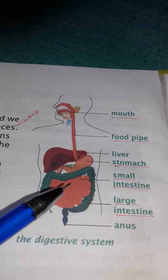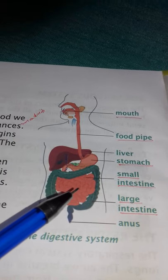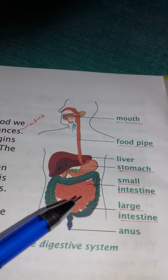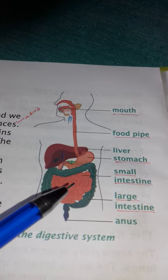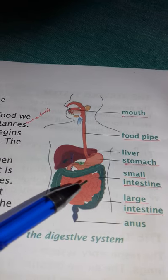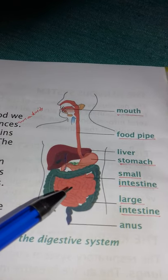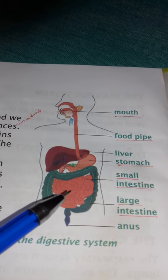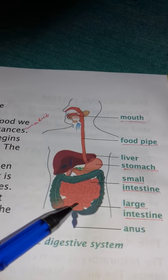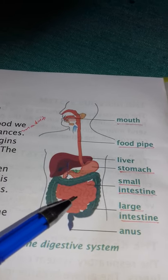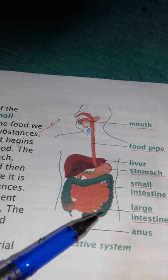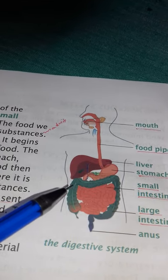When the food is digested in the small intestine, the digested food is taken to all parts of our body through the blood — the blood carries it to all parts of the body. The undigested food remaining in the small intestine then moves to the large intestine.